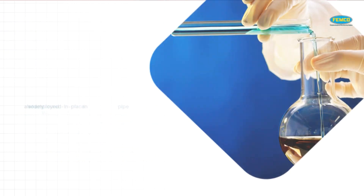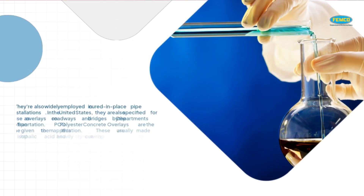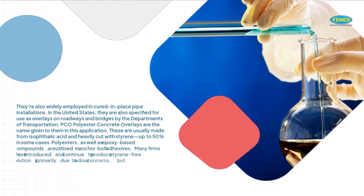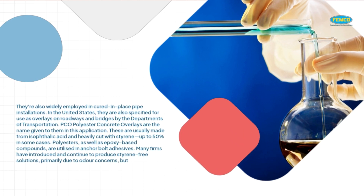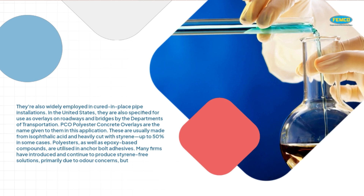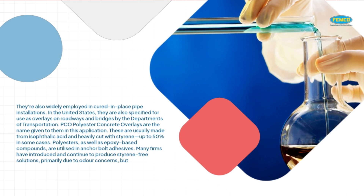They're also widely employed in cured-in-place pipe installations. In the United States, they are also specified for use as overlays on roadways and bridges by the Departments of Transportation. PCO — Polyester Concrete Overlays — is the name given to them in this application. These are usually made from isophthalic acid and heavily cut with styrene, up to 50% in some cases.